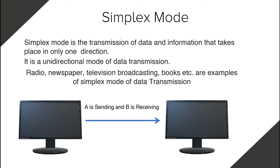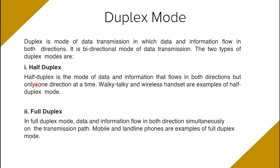Duplex is the mode of data transmission in which data and information flow in both directions — it is a bidirectional mode. There are two types of duplex mode: half duplex and full duplex. In half duplex, data flows in both directions but only one direction at a time. Walkie-talkies and wireless handsets are examples of half duplex mode.